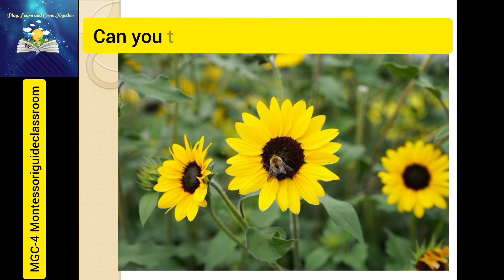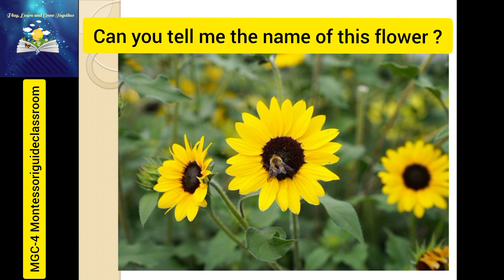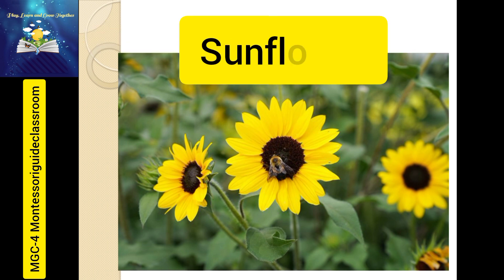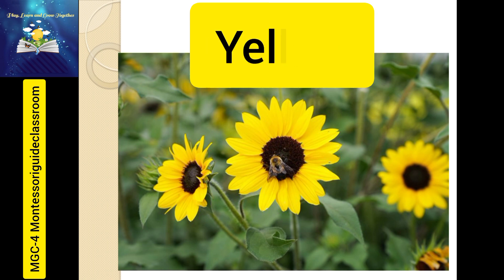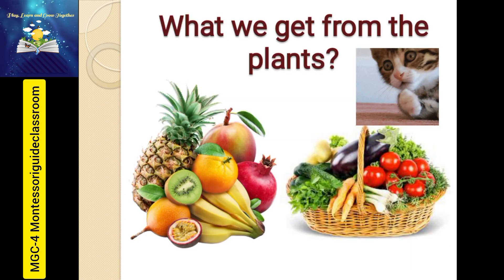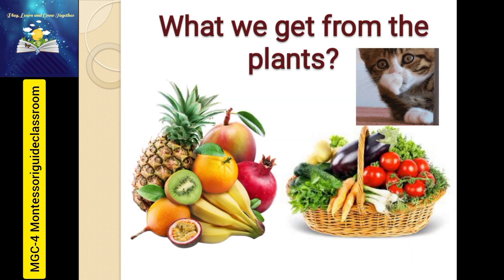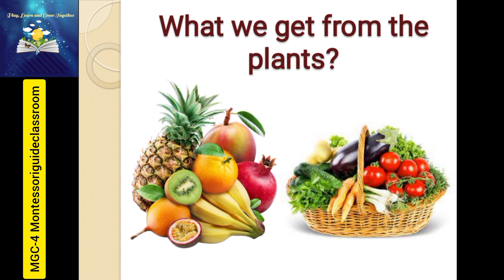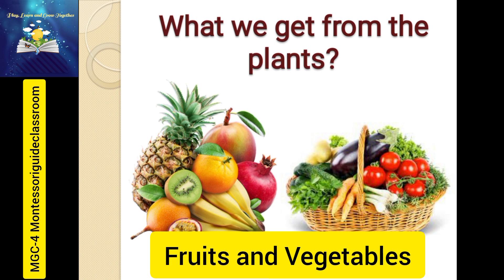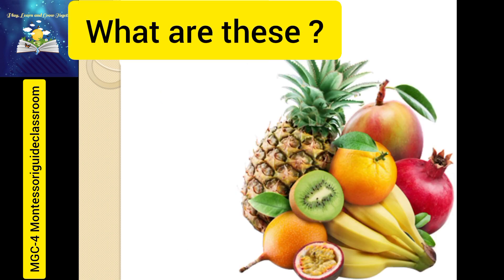Can you tell me the name of this flower? Yes, sunflower! And what is the color of this flower? Yellow. Okay, now tell me what we get from the plants. Fruits and vegetables!